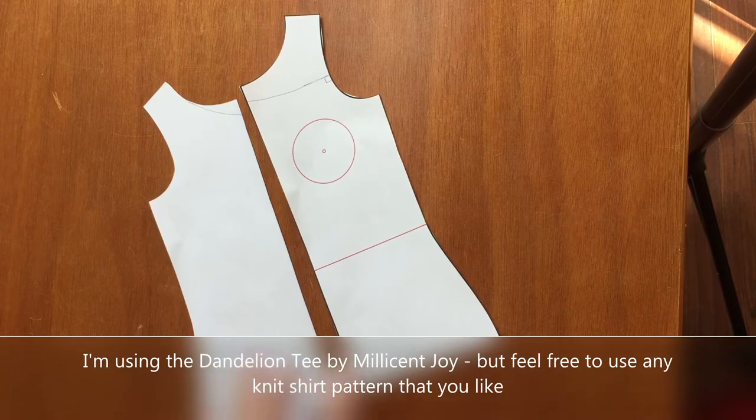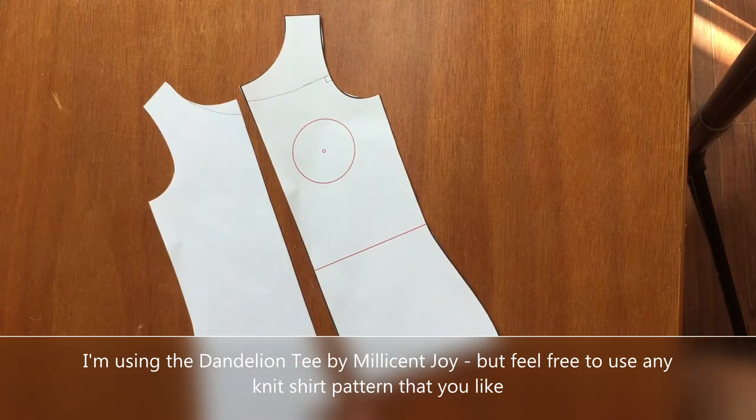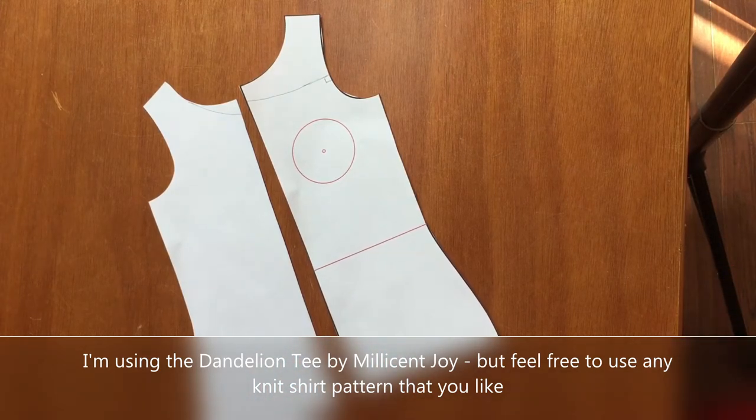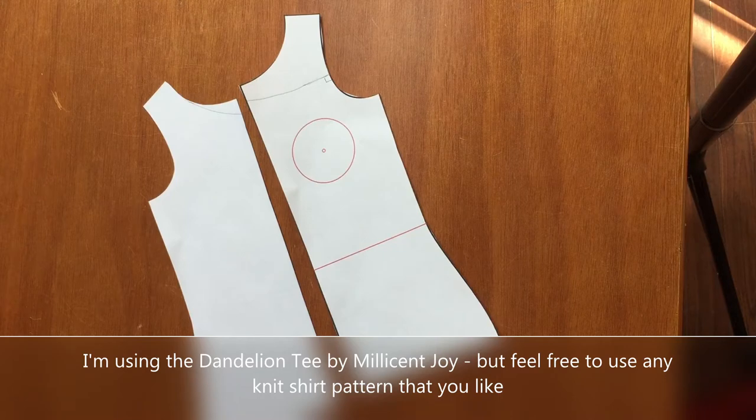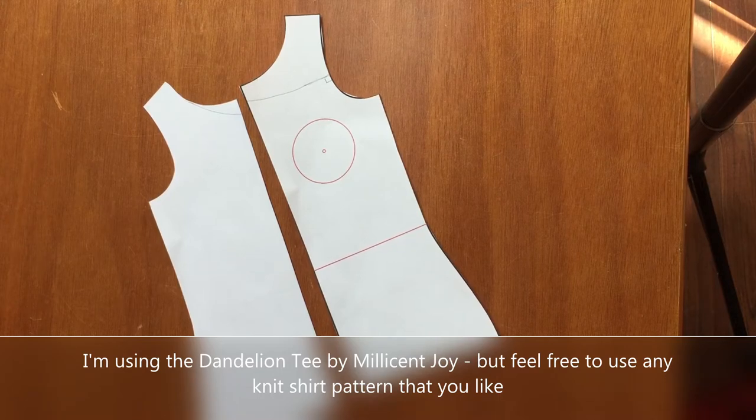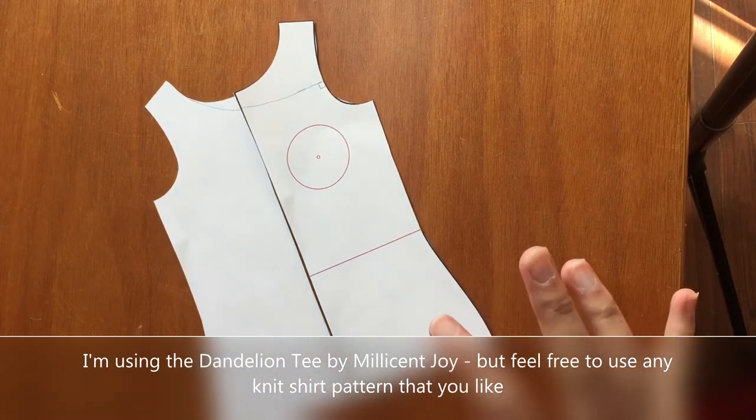So let's get started with an off-the-shoulder style sweater. For this I am using my dandelion tee pattern because I love it so much, but you can use any sort of knit shirt or garment that you have that you know you like the fit of, or a sloper, or whatever works for you.